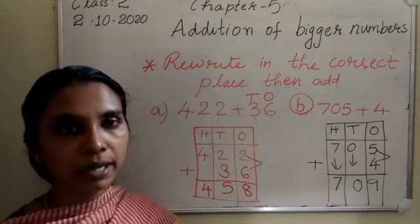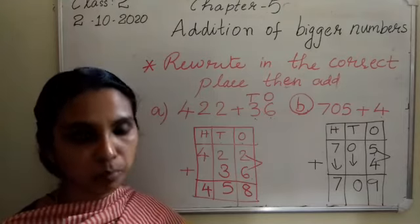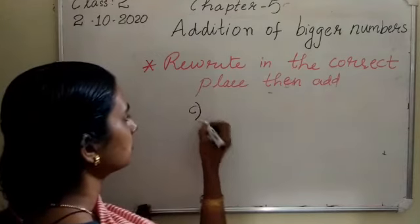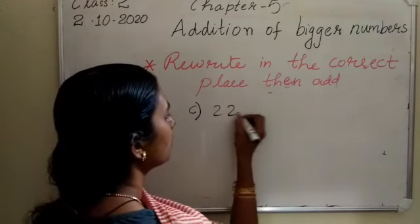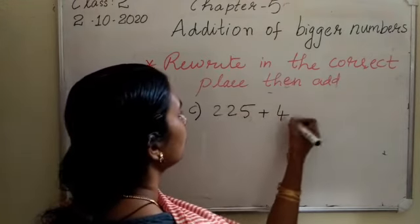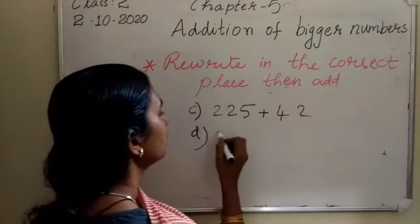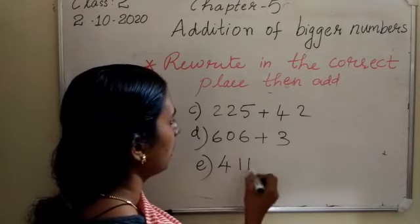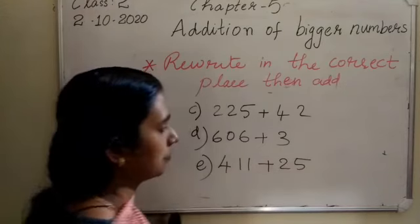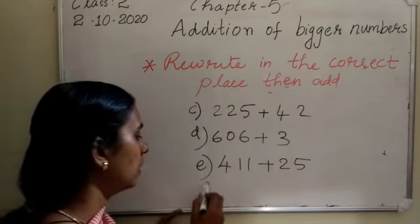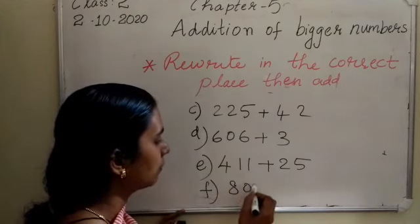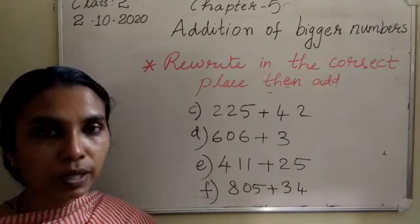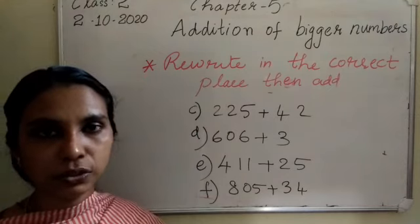I hope you have understood how to add a 3-digit number with a 2-digit number. Copy down the questions and do them in your notebook: F — 805 plus 34. Do these questions in your notebook. Today's class is over. Thank you.